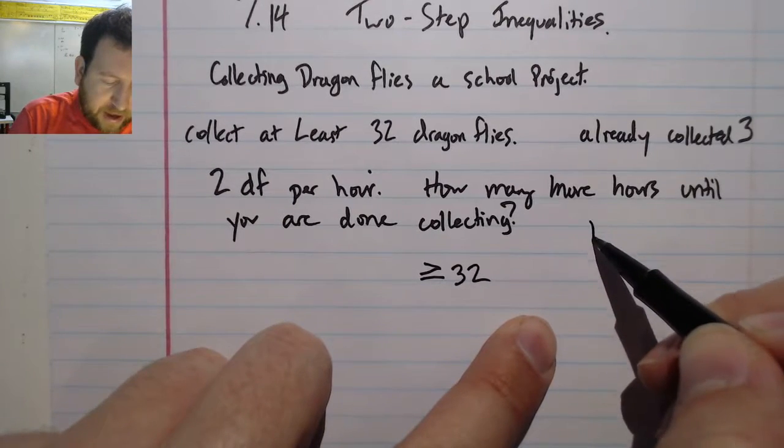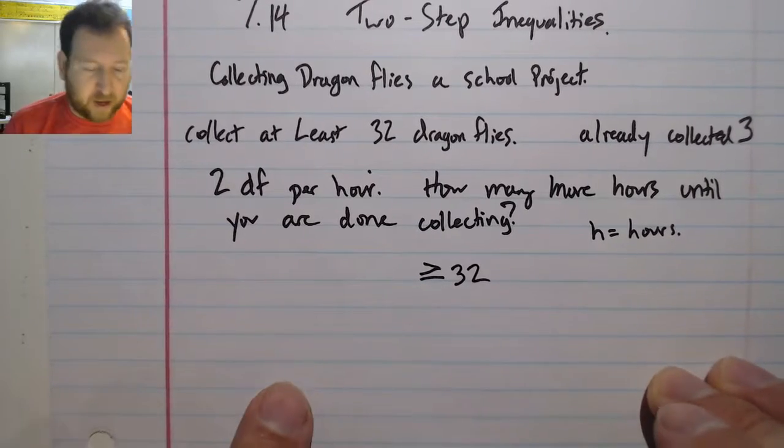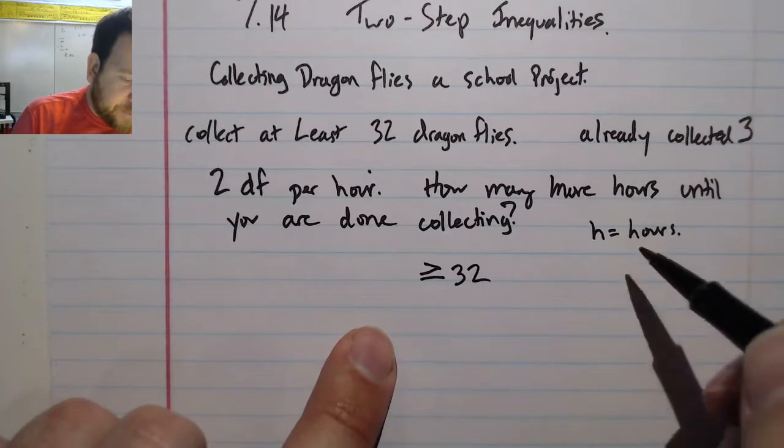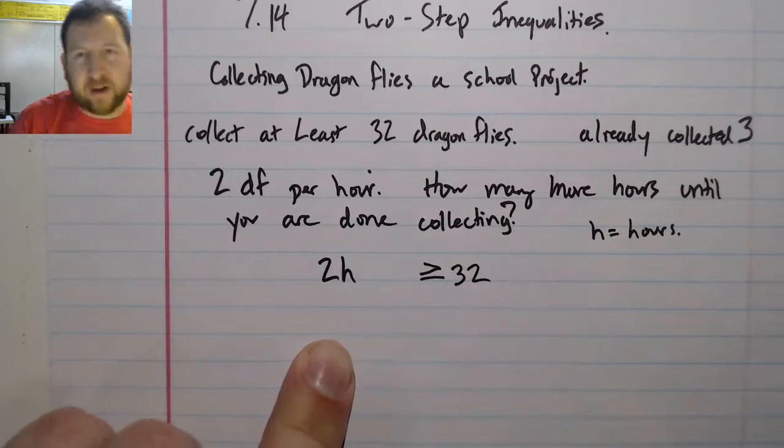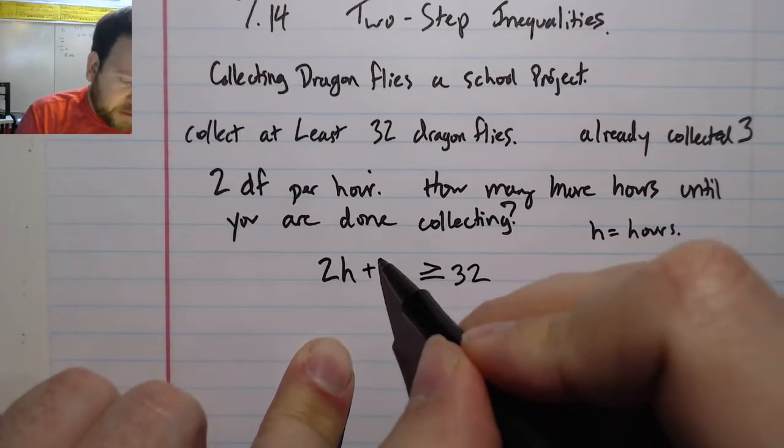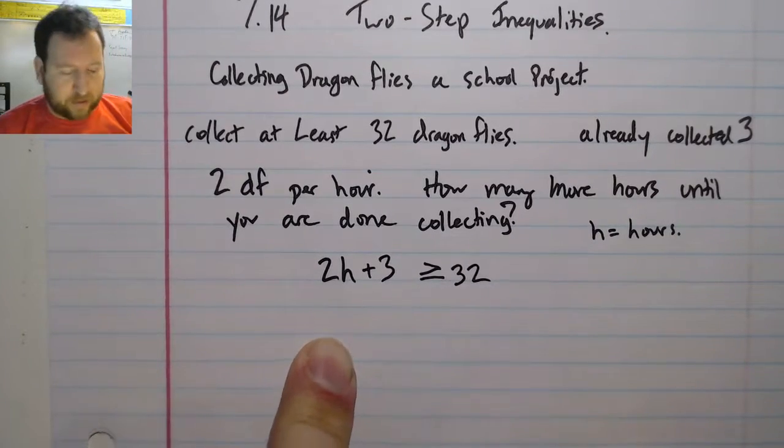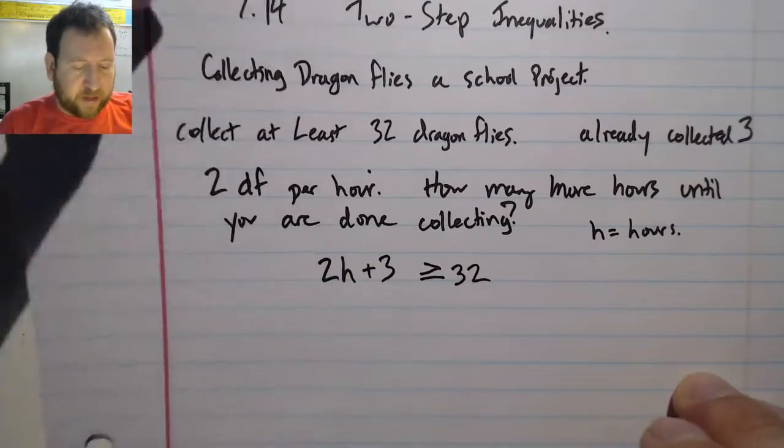And this is going to be, we're going to write an algebraic expression and I'm going to probably use the variable h equals hours because it's easy for me to understand and remember. All right, so I collect two dragonflies every hour so I can write 2h, and I already have three so I can add in the three that I've already collected.